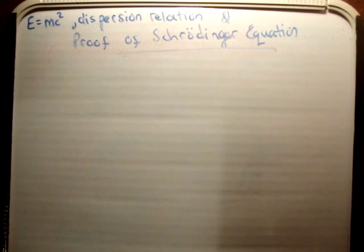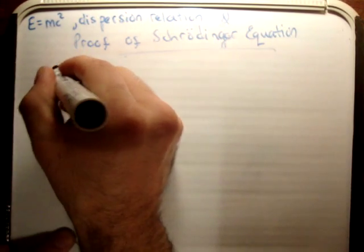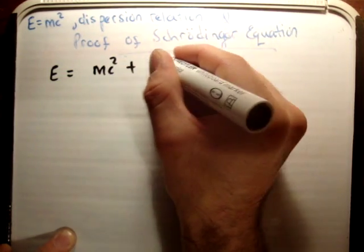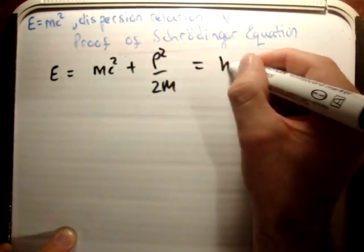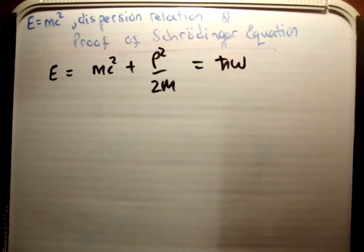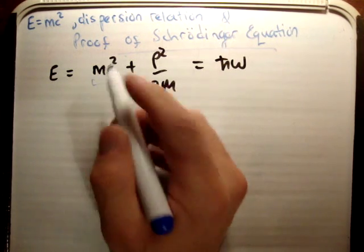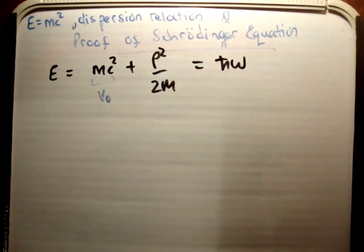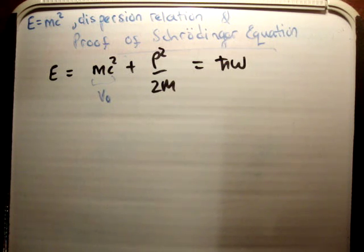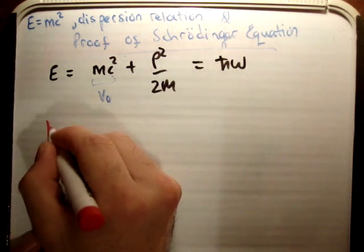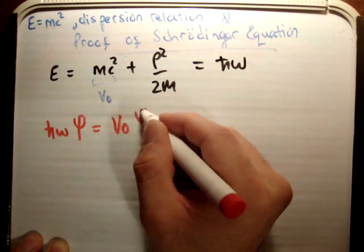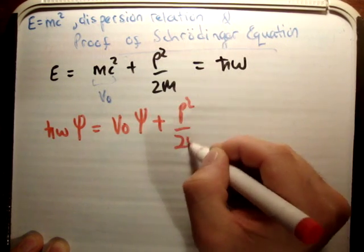A moment ago I showed that E equals mc² plus p²/2m, and we know E equals ℏω. We can treat mc² as a kind of initial potential V₀. So multiplying the dispersion relation everywhere by a wave ψ, we get: ℏω·ψ equals V₀·ψ plus (p²/2m)·ψ. We let the wave equal e^(ikx − ωt).